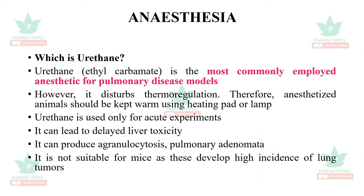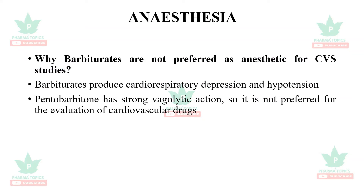What is urethane? Urethane, or ethyl carbamate, is the most commonly employed anesthetic for pulmonary disease models; however, it disturbs thermoregulation, so anesthetized animals should be kept warm using a heating pad or lamp. Urethane is used only for acute experiments as it can cause delayed liver toxicity, agranulocytosis, and pulmonary adenomata. It is not suitable for mice, as they develop a high incidence of lung tumors.